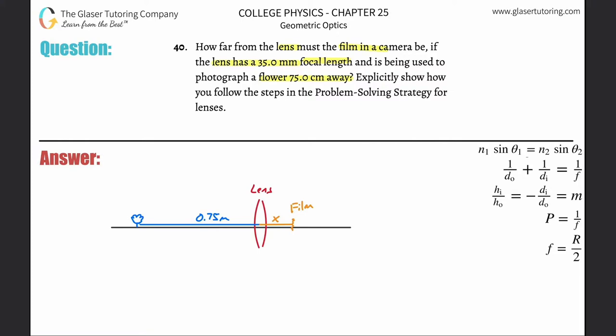They also tell us the focal length here. The focal length is a point - you can do it to the left or to the right, it really doesn't make a difference - but the focal length is an inherent property of the lens itself.